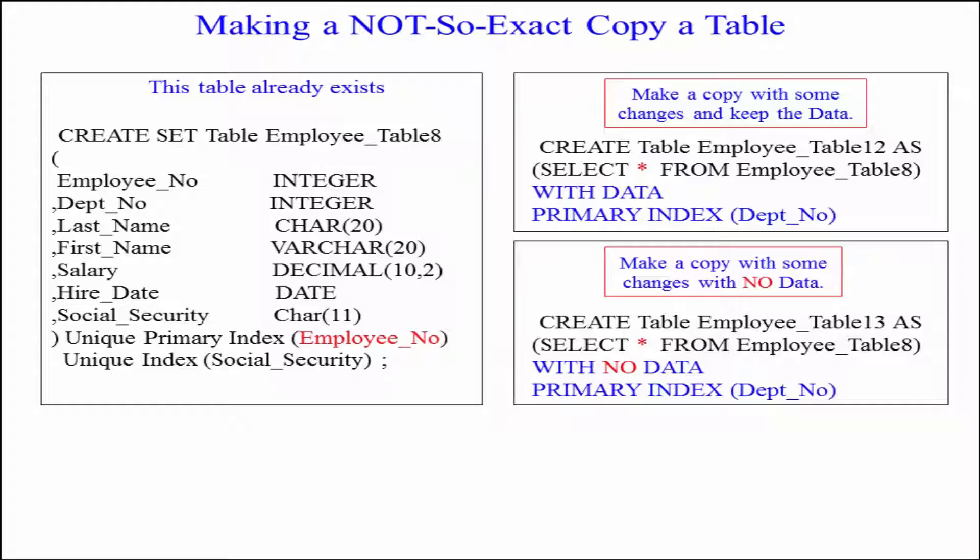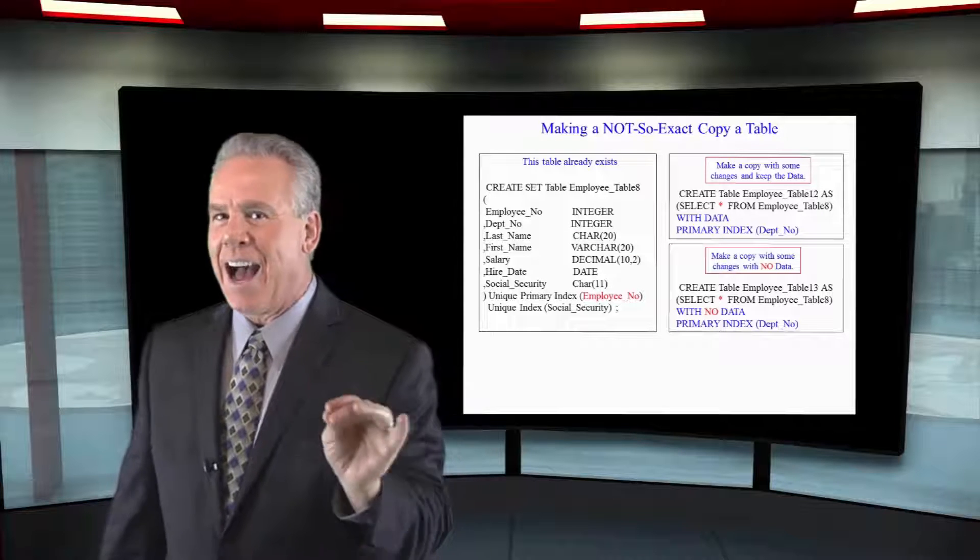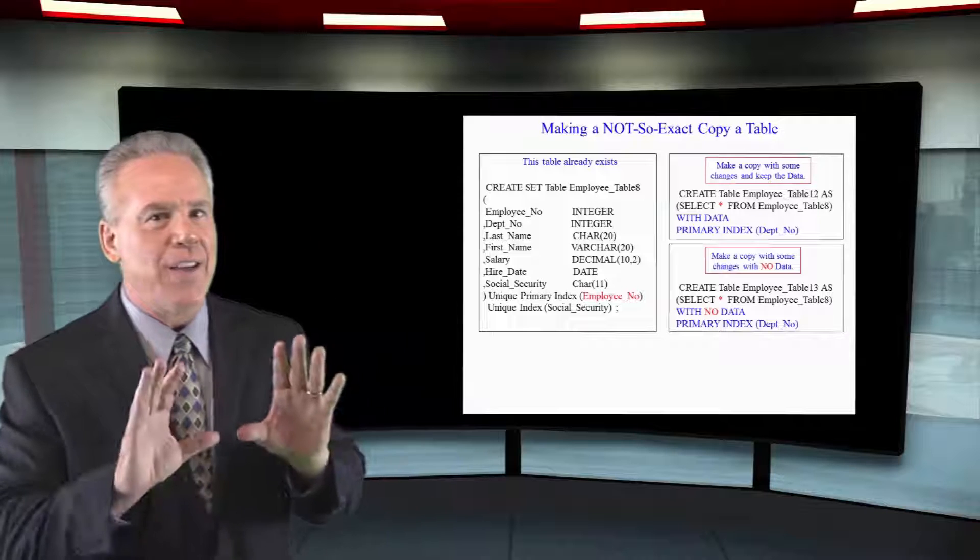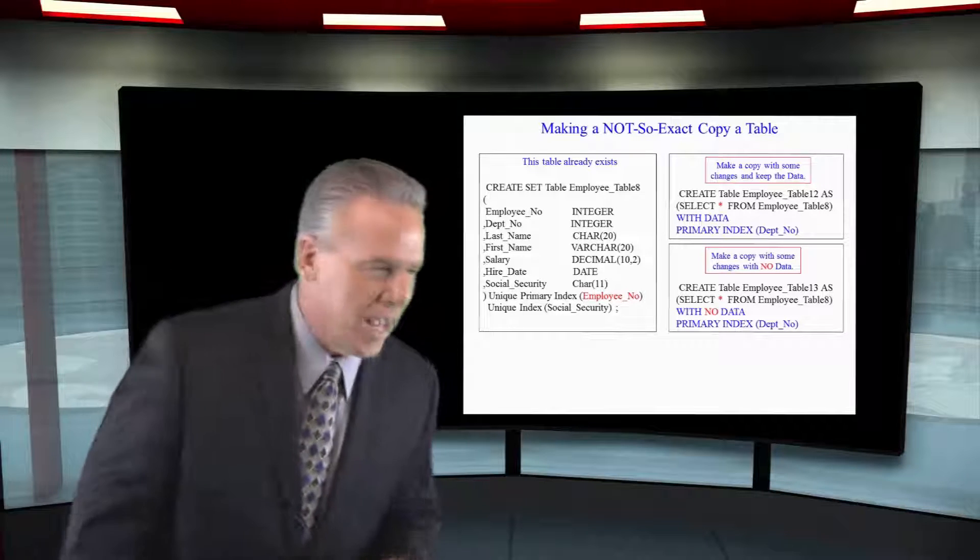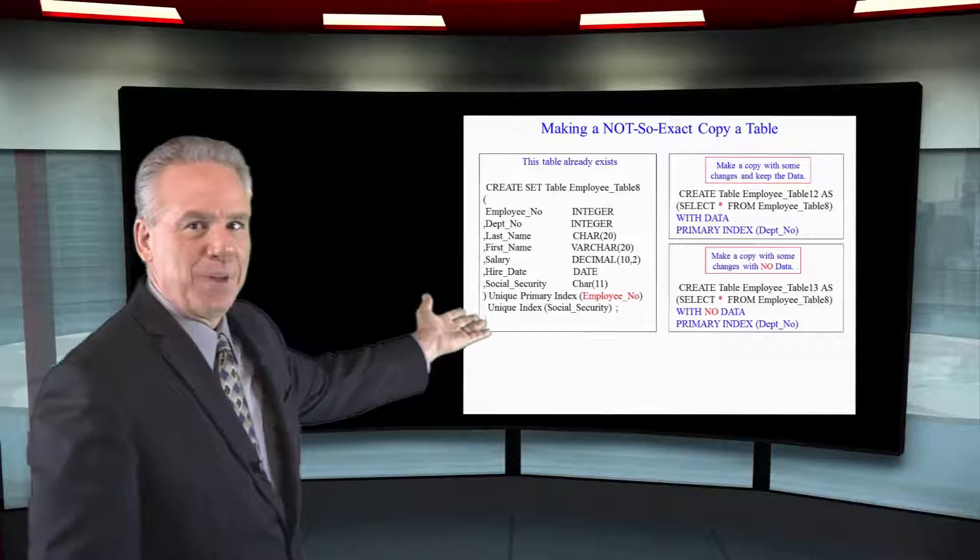Notice that I say CREATE TABLE my_new_table_name AS open paren SELECT asterisk FROM employee_table_8 close paren WITH DATA. And you know I don't want it to be an exact copy. I want it to have a new primary index and I've chosen it to be dept_no.